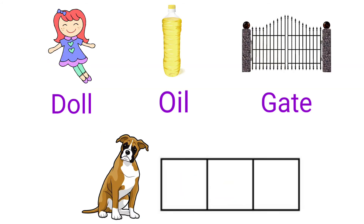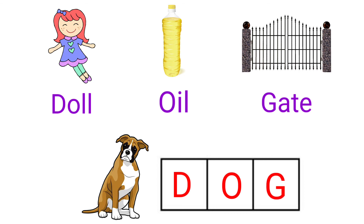Second set of pictures: doll, oil, and gate. The first letter of doll is D, so we have to get the first letter D. The first letter of oil is O, so we have to get the first letter O. The first letter of gate is G, so we have to get the first letter G.